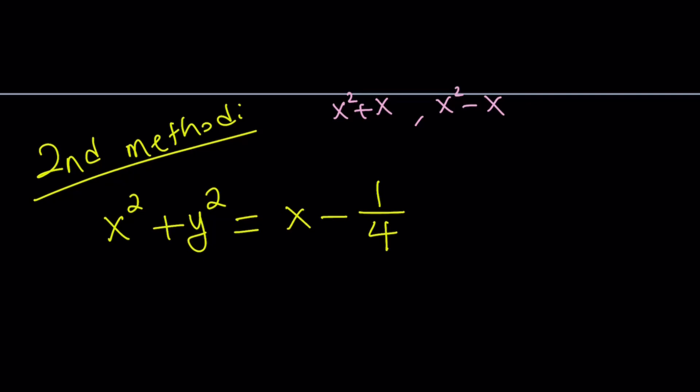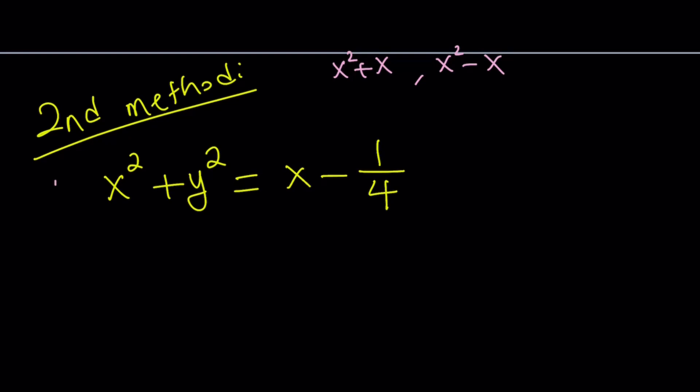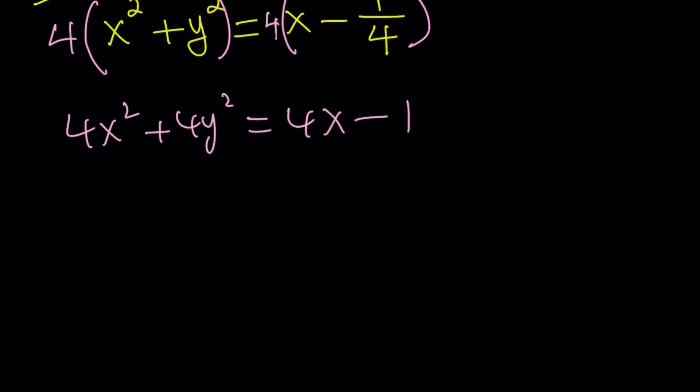Multiply by 4. Why? Because that's going to help. Most of the time, 99.9999% of the time it's going to help. So let's multiply both sides by 4. That gives us 4x² + 4y² = 4x - 1. But we'll make it better by putting everything on the same side. Let's subtract 4x minus 1.